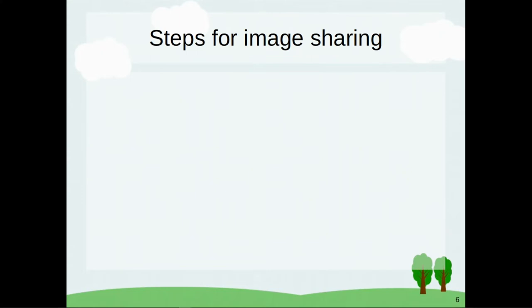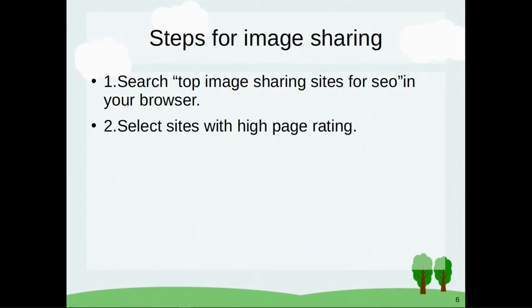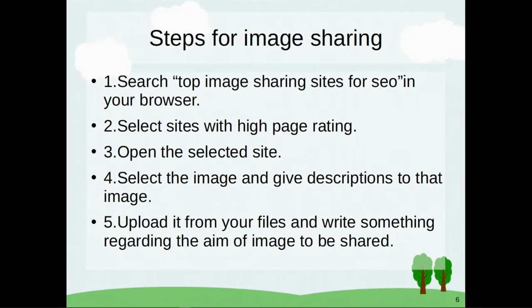Now we will see the steps for image sharing. First, select sites for SEO in your browser. Next, select sites with high page rating — meaning sites that have high domain authority and page authority. Then open the selected site, select the image, and give descriptions to that image. Upload it from your files and write something regarding the aim of the image to be shared.